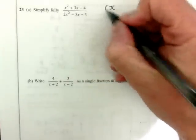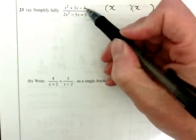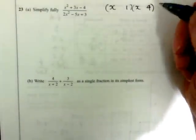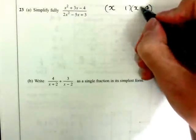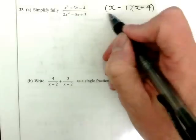The top one, x and x to get x squared, we need a 3 from a 4, a negative 4, so we're going to need a 4 and a 1 to give us a difference of 3 plus 3x. So you need the plus on the larger number. So that's the top done, x minus 1 times x plus 4.